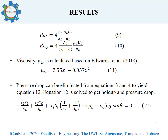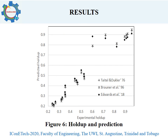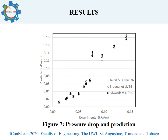For the interfacial gas-liquid shear stress, we use a constant value of FI equals 0.014. But if the value of FG is greater than FI, then FI equals FG is used. Pressure drop can be eliminated from equations 3 and 4 to yield equation 12. Equation 12 is solved to get hold-up and pressure drop. The experimental and predicted pressure drop is shown in Figure 6. Figure 7 shows experimental and predicted hold-up.